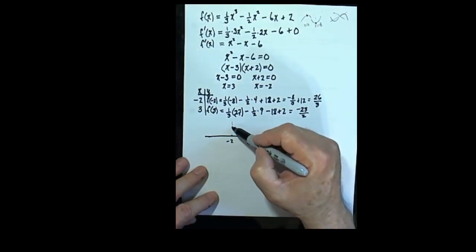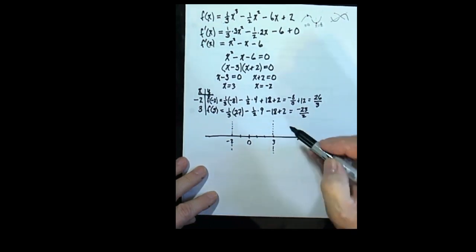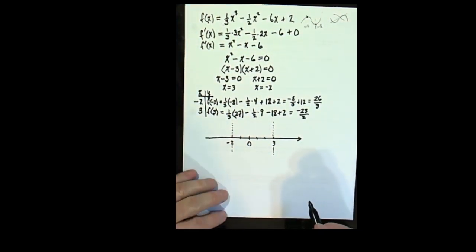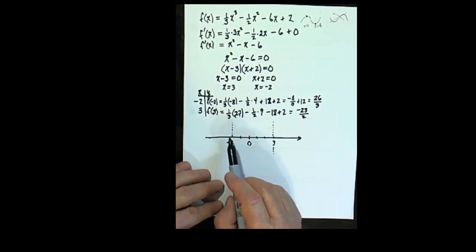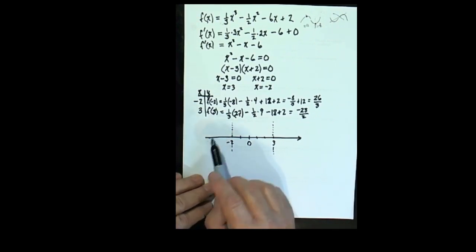You see, at this point here, at negative 2 and at 3, those are the only times that this function can turn around. Because that's the only times that it levels off. That means that it's either going up all the time to the left of negative 2, or it's going down all the time to the left of negative 2.